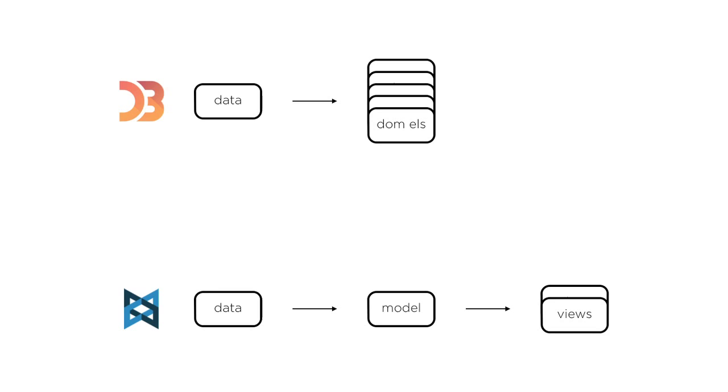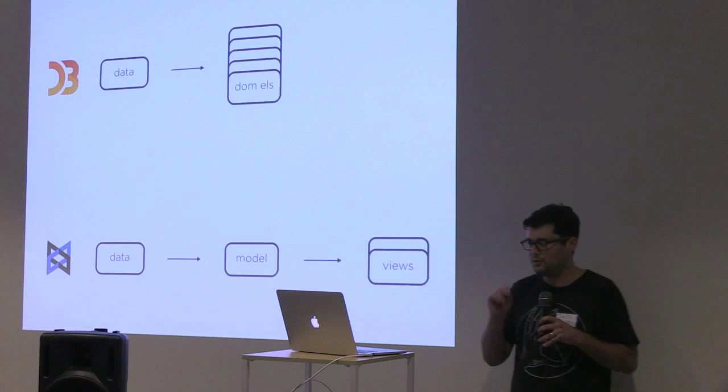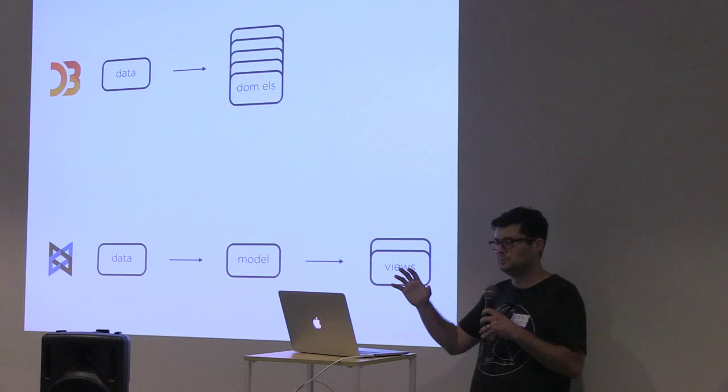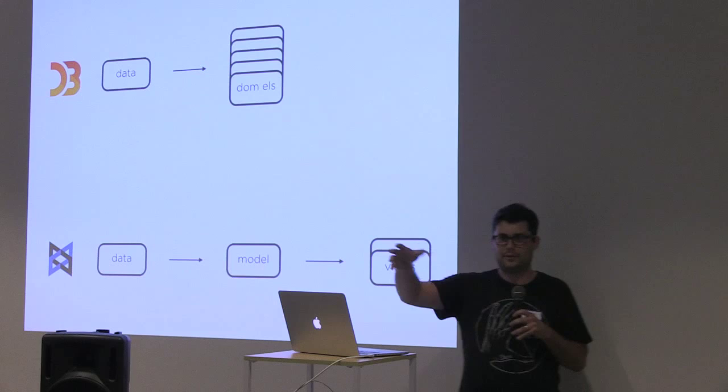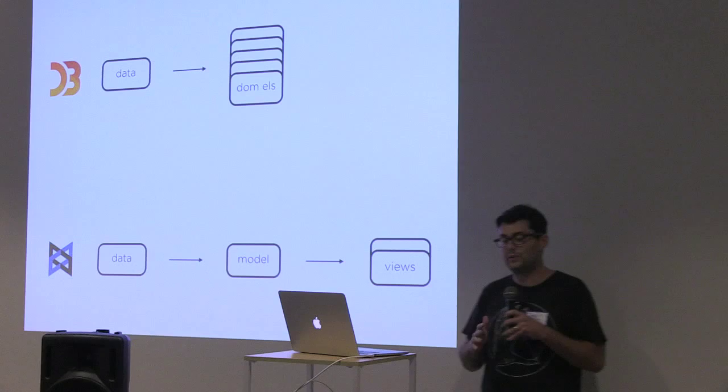Let's talk in a bit more detail about how D3 and Backbone differ in their approach to binding data to the DOM. D3 binds data directly to DOM elements, whereas Backbone binds data to a model, and then one or more views sit on top of that model and determine how to render the data to the DOM. That method of rendering is up in the air — you might use a template or some other methodology. Backbone is very agnostic at the view level.